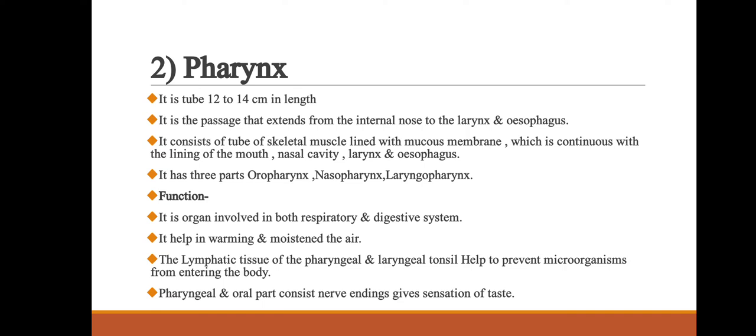Functions of the pharynx: first, it is the organ involved in both the respiratory and digestive systems; second, it helps in warming and moistening the air; third, the lymphatic tissue of the pharyngeal and laryngeal tonsils helps to prevent microorganisms from entering the body; and last, the pharyngeal and oral parts consist of nerve endings that give the sensation of taste.